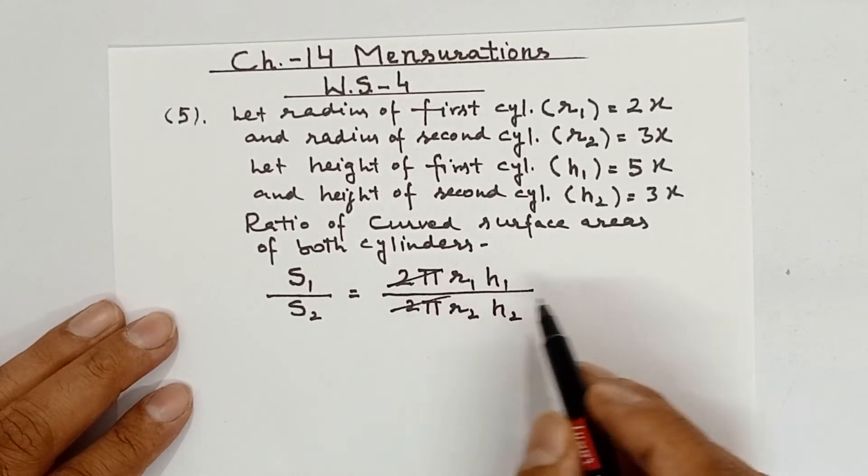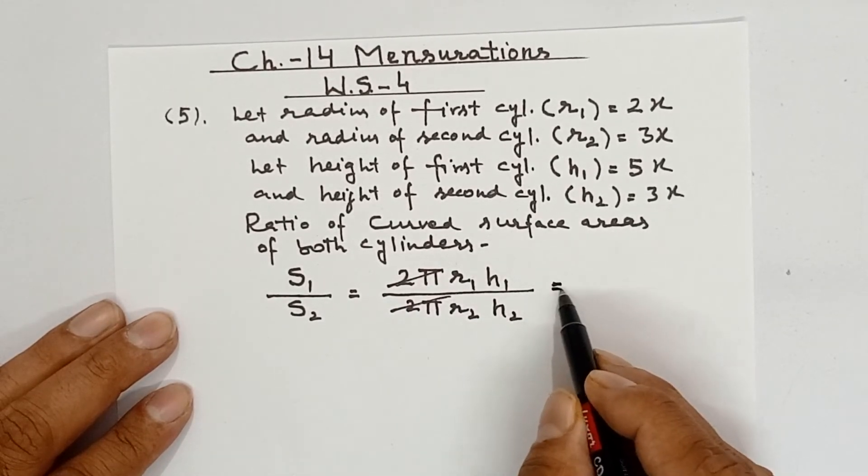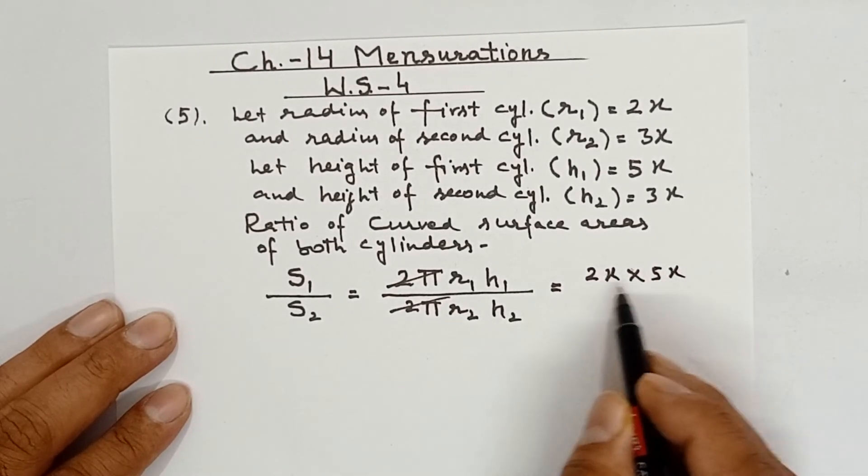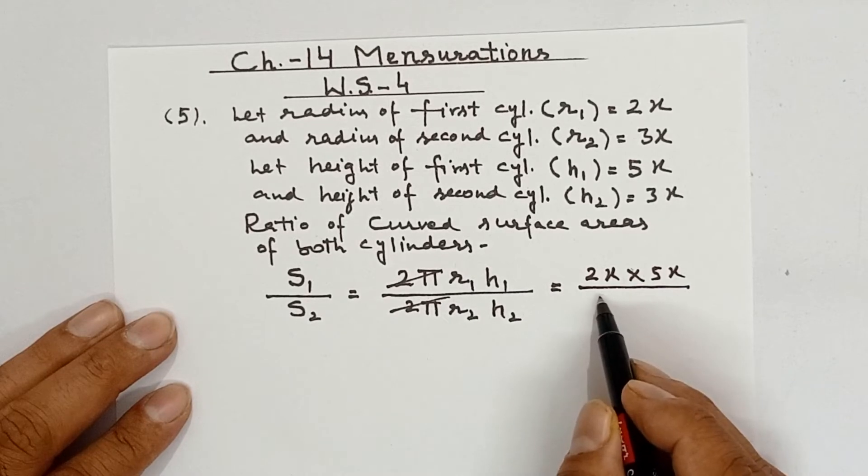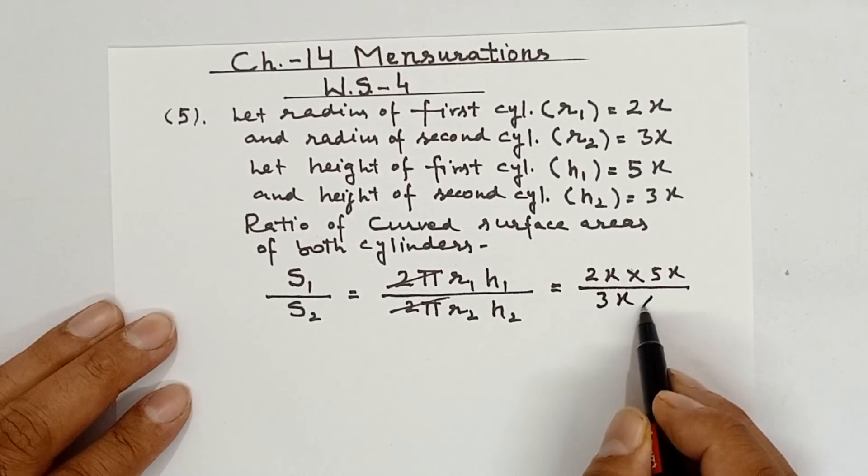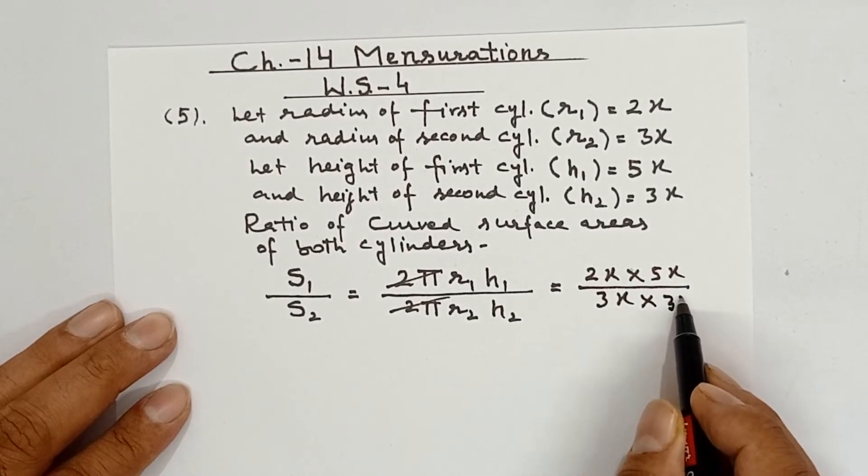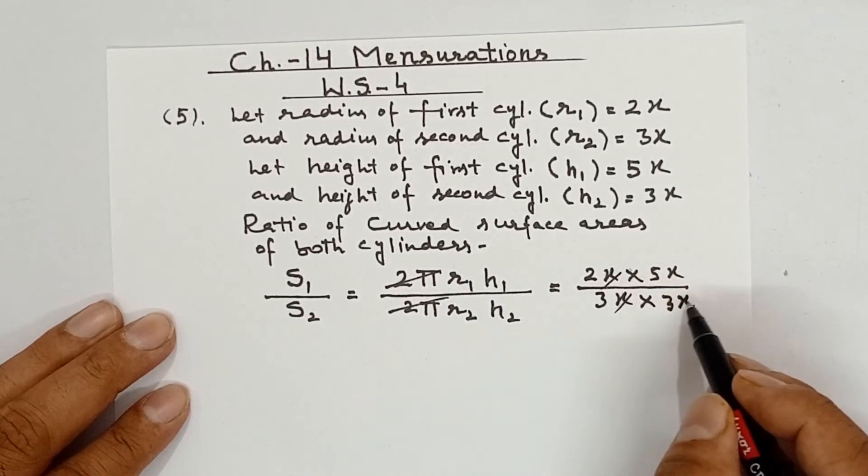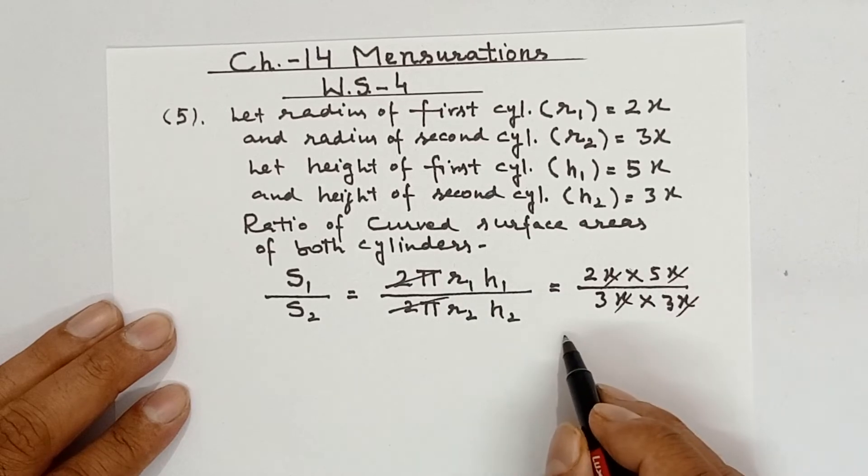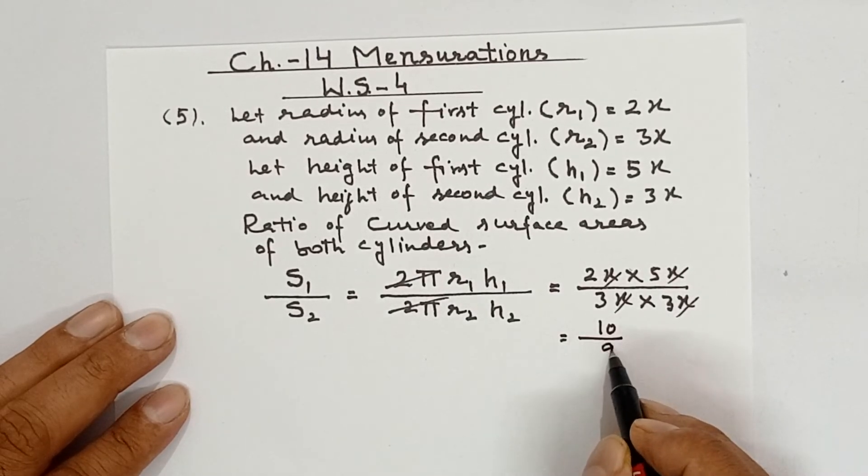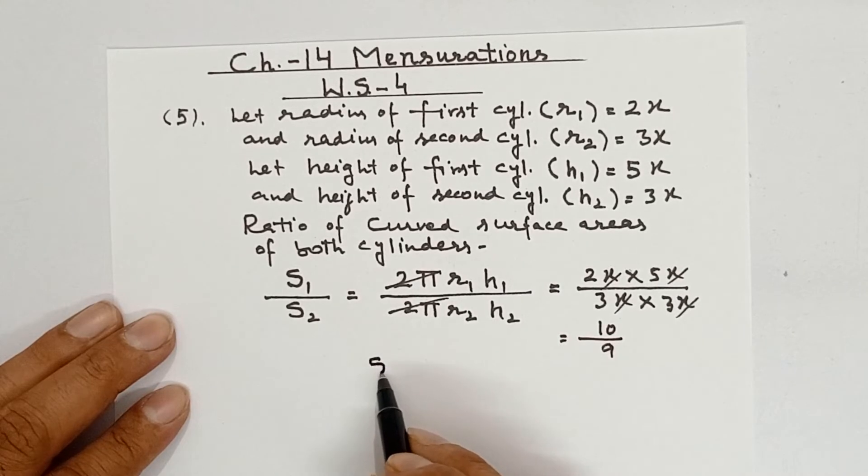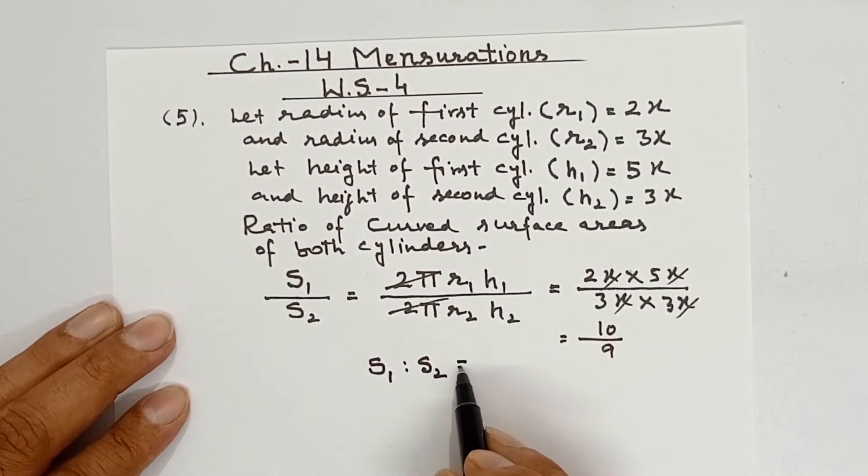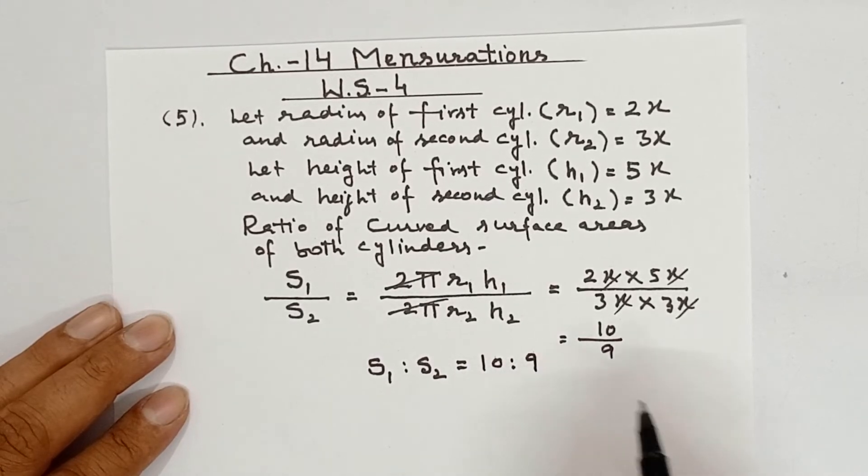2π and 2π cancel out with each other. R₁ is 2x, H₁ is 5x, R₂ is 3x, and H₂ is 3x. The x terms cancel out. 2×5 is 10 and 3×3 is 9, so the ratio of the curved surface area S₁:S₂ is 10:9. This way solution of question 5 will be done.